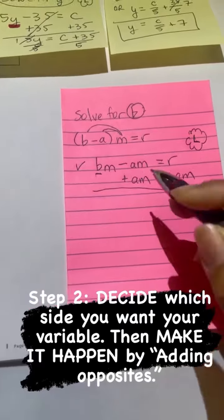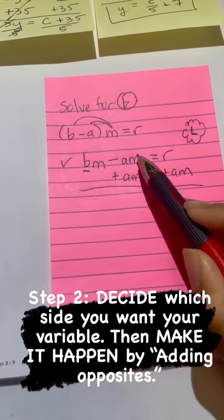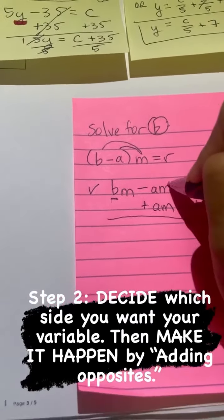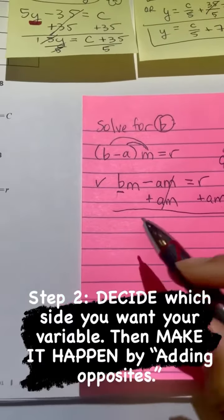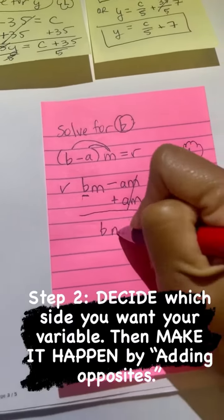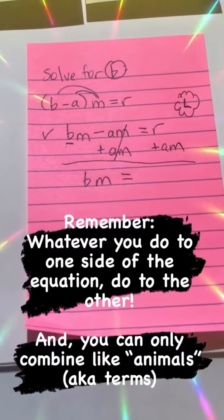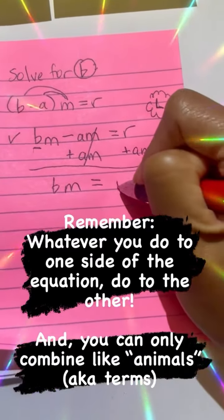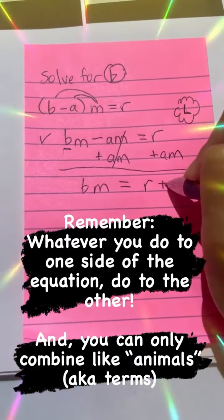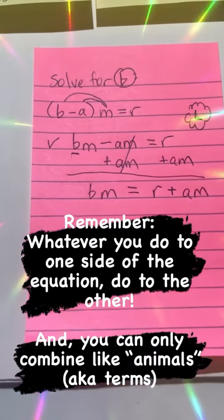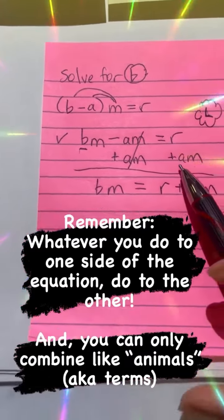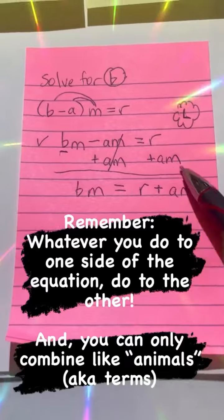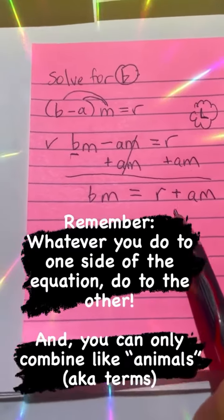So therefore, on this left side, the negative AM plus AM cancels out. It just becomes a zero. It disappears. I'm left with BM is equal. Therefore, the right side would just become R plus AM. So the right side is just R plus AM. You can't add these two together or you can't combine them. They're different animals.